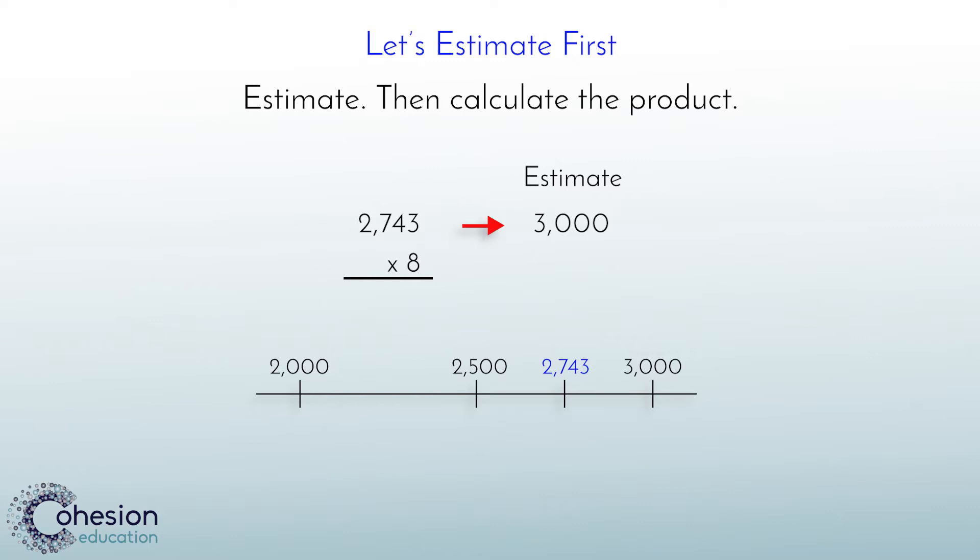When we multiply 3,000 by 8, we get a product of 24,000. Now, when we move on to actually solving, our answer should be close to 24,000. This can help us decide if our actual answer is reasonable or not.